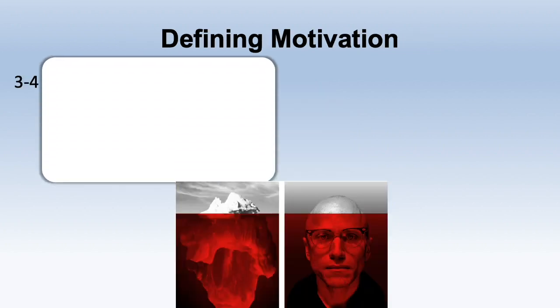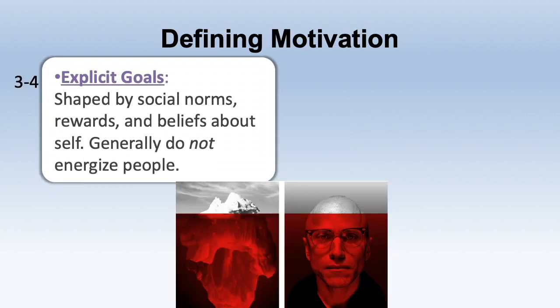There are several different types of motivation. First, we have explicit goals — 'explicit' simply means spoken or written, basically articulated. These tend to be shaped by social norms, rewards, and beliefs about self. Unfortunately, explicit goals generally do not energize people — someone might say they believe in something, but that doesn't necessarily mean they'll be motivated to do it.